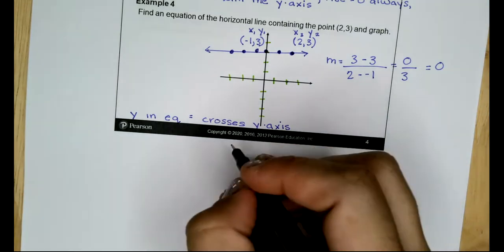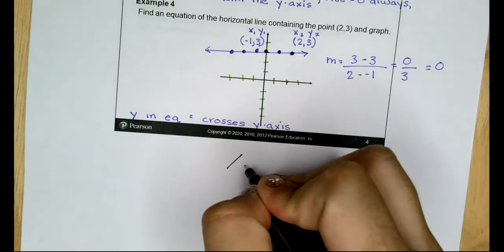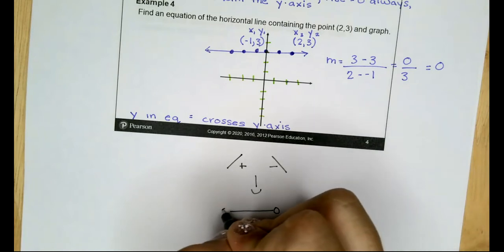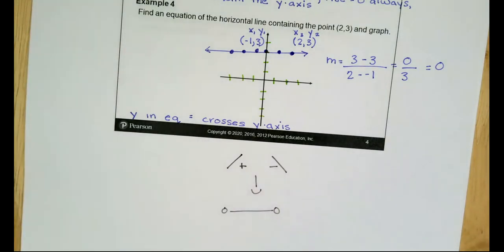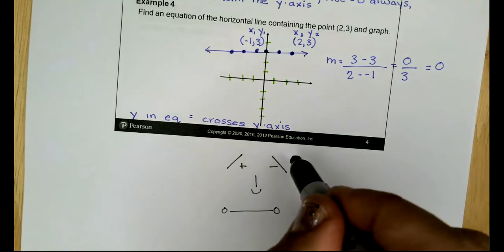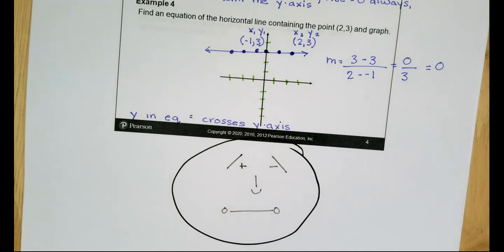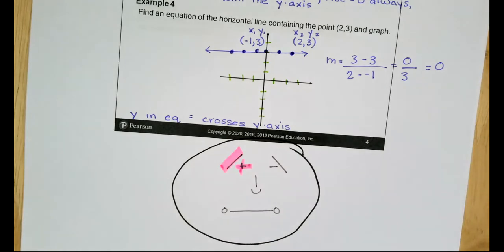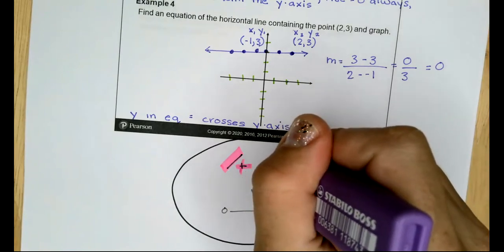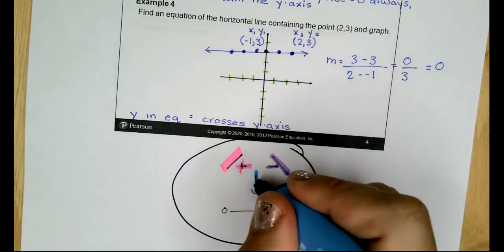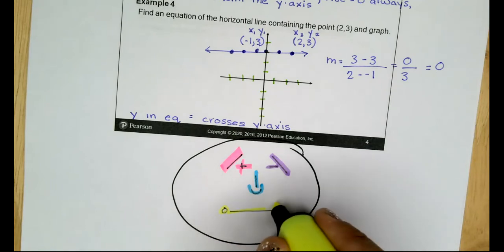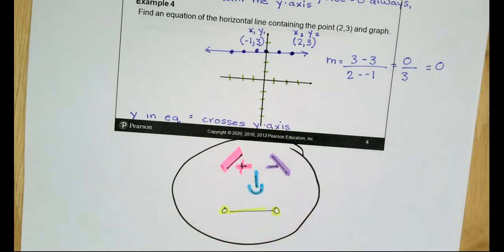Something useful to know is slope guy. Slope guy is a face that tells us: if the slope goes up from left to right, the slope is positive; if it goes down from left to right, the slope is negative; if it goes straight up and down, the slope is undefined; and if it's flat, the slope is zero.